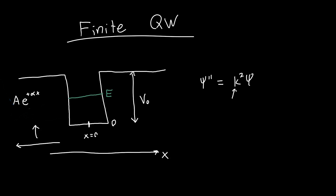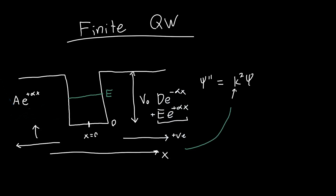So we don't have to worry about that. We can make the same argument on the right-hand side. The equation on the right looks like d·e^(−αx) + e·e^(+αx). As we go to the right, x becomes more positive, so if we had an e^(+αx) term, the wave function would blow up. This is also not a physical solution to Schrödinger's equation, because we expect the wave function to be normalizable — we expect it to have a finite integral under the curve.